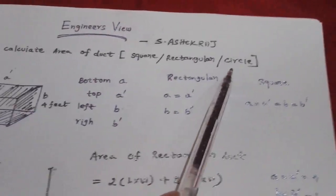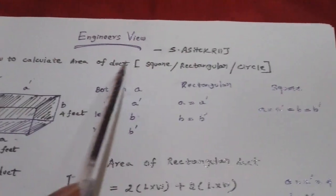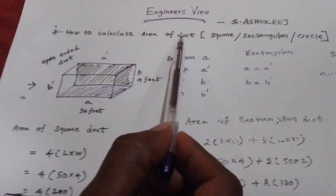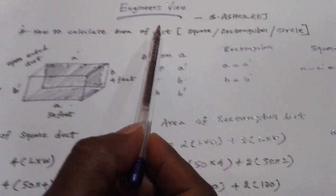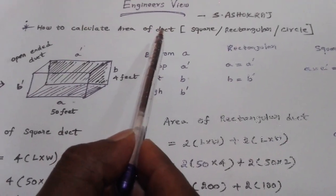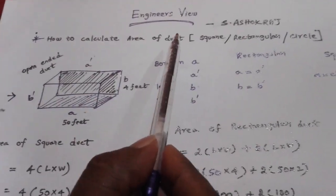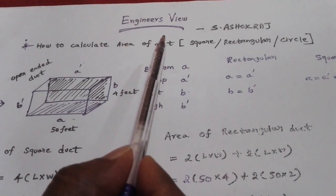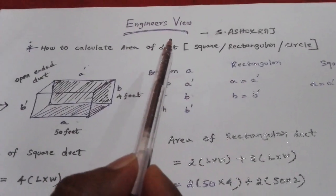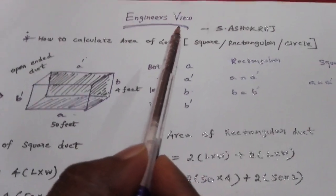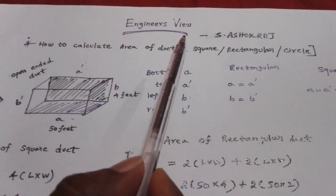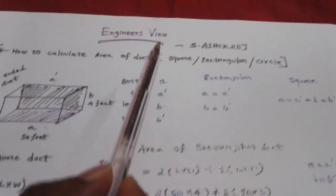Where are ducts? Ducts are part of the AC duct HVAC system. You can see the area of the ducts in an HVAC system, including fresh air ducts.